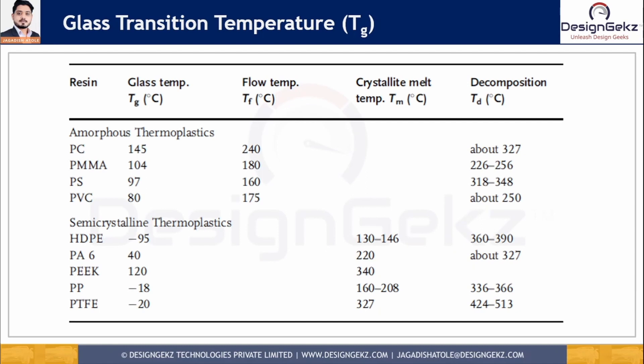Here in the chart we have the Tg, flow temperature, melt temperature, and decomposition temperature Td for some materials. Polycarbonate has a Tg of 145 degrees Celsius, acrylic 104 degrees Celsius, polystyrene 97 degrees Celsius, and PVC 80 degrees Celsius — these amorphous materials are recommended for use below their Tg. Semi-crystalline materials like HDPE have a Tg of minus 95 to minus 110 degrees Celsius, polyamide 40 degrees Celsius, polypropylene minus 18 degrees Celsius, and PTFE minus 20 degrees Celsius — these are recommended for use above their Tg.